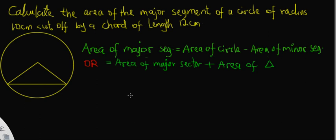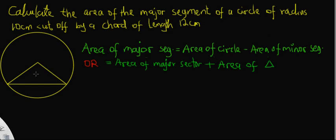I have copied the question down on my sketchpad. Here is the question again: calculate the area of the major segment of the circle of radius 10 cm cut off by a chord of length 12 cm. Without wasting much time, I will dive into the solution.